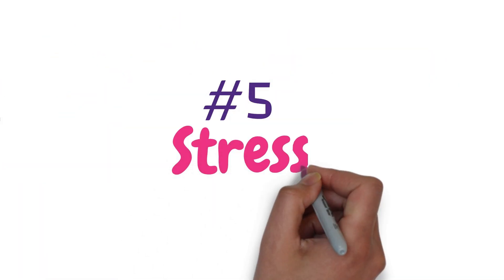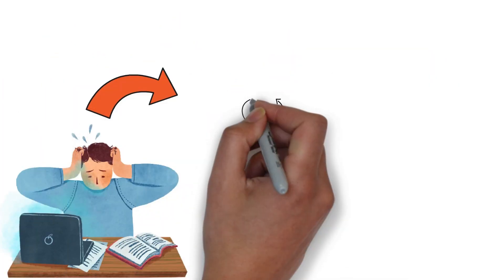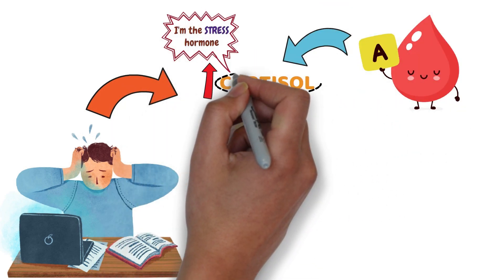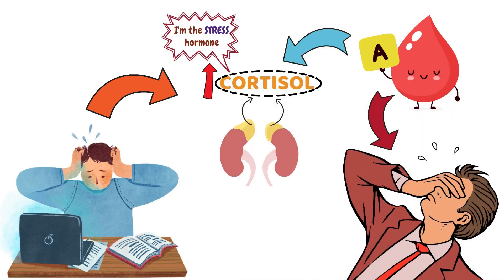Number five, stress. Stress boosts your body's level of cortisol, the stress hormone. People with type A blood tend to have more cortisol, so you may have a harder time dealing with stressful situations.